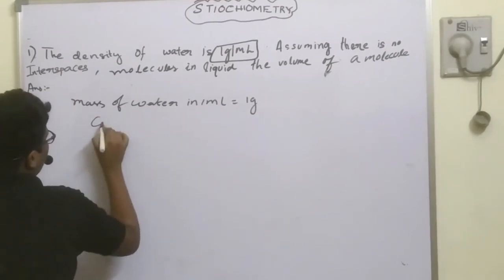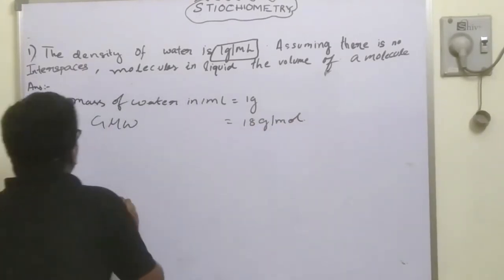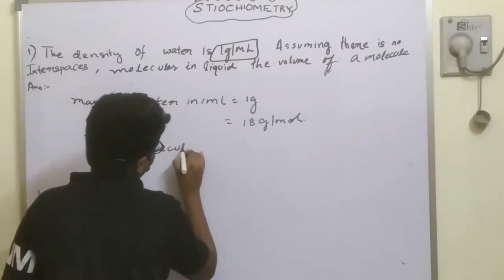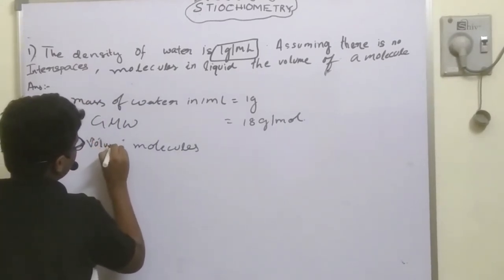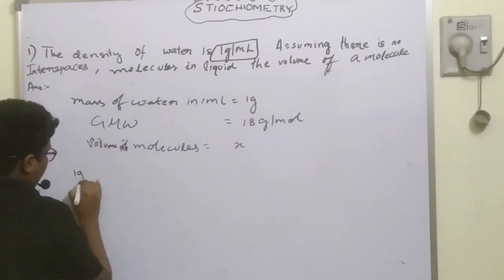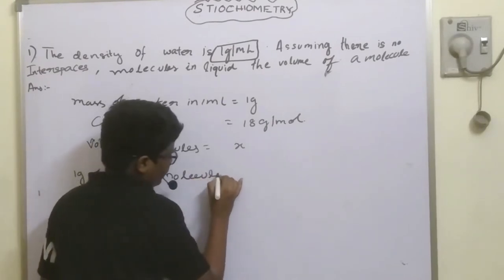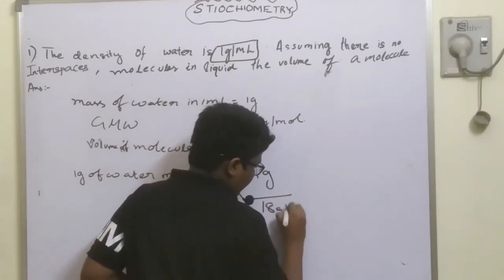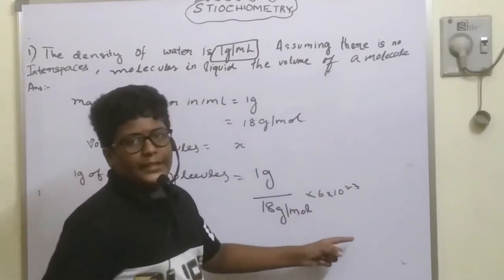Then 1 gram by 1 milliliter is equal to 18 grams per mole. The number of molecules X: for 1 gram of water, number of molecules equals 1 gram divided by gram molecular weight, which is 18 grams per mole, multiplied by 6.023 into 10 to the power of 23.